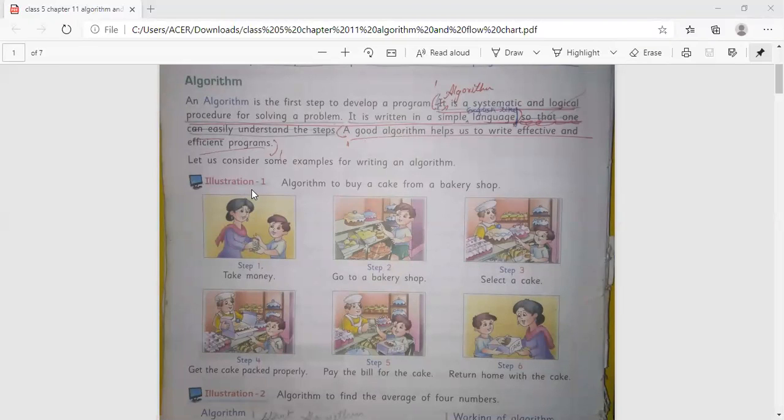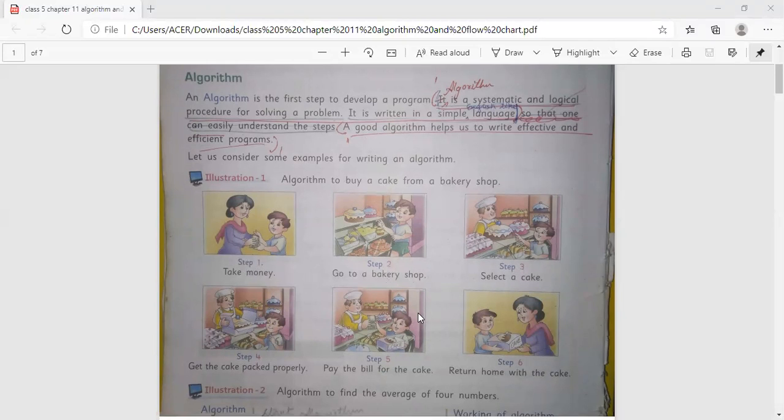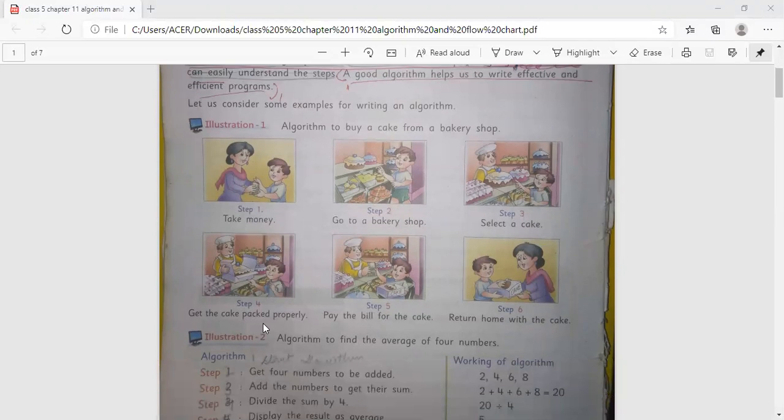Let us consider some examples for writing an algorithm. Illustration 1: Algorithm to buy a cake from a bakery shop. Step 1, take money. Step 2, go to a bakery shop. Step 3, select a cake. Step 4, get the cake packed properly. Step 5, pay the bill for the cake. Step 6, return home with the cake.